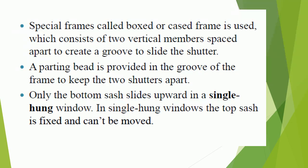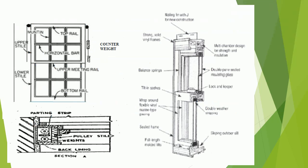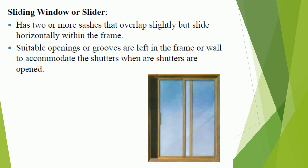In a single hung window, only the bottom sash slides upward; the top sash is fixed and cannot be moved. Sliding window or slider: has two or more sashes that overlap slightly but slide horizontally within the frame. Suitable openings or grooves are left in the frame or wall to accommodate the shutters when opened.